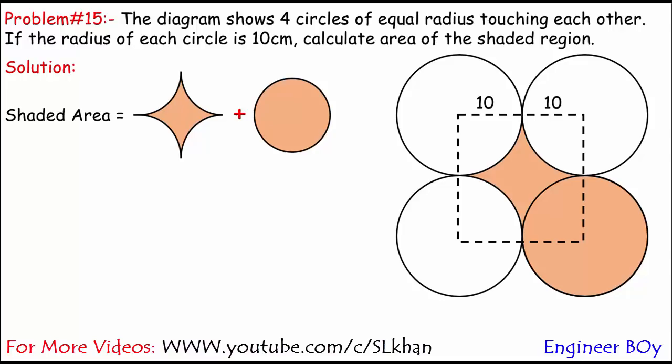Because the side of the square is just the summation of two radii. And the radius of each circle is 10 cm. So 10 plus 10 equals 20 cm is the side of the square.